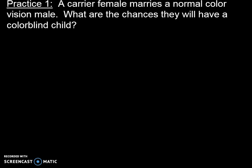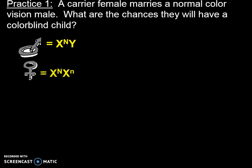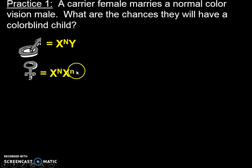Let's do two practice problems, then we'll practice more in class. Please write the problem down and go through the steps. A carrier female marries a normal color vision male — what are the chances they have a colorblind child? A carrier female is heterozygous, hiding the abnormal little n. The male is normal color vision, uppercase N. So here are our parent genotypes set up for the cross.